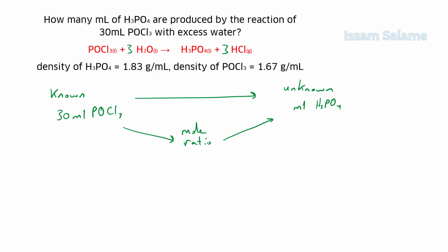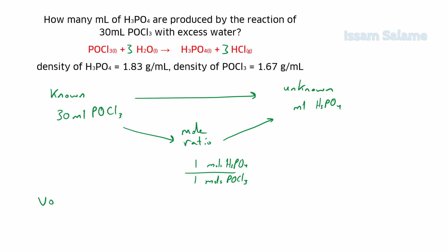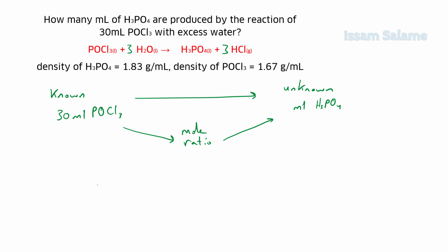We set up the mole ratio by putting moles of the known quantity — here moles of POCl3 — in the denominator, and moles of the unknown quantity — here H3PO4 — in the numerator, taking coefficients from the balanced equation. Since we cannot convert volume to moles directly, we use a specific procedure for all stoichiometry volume-volume problems.